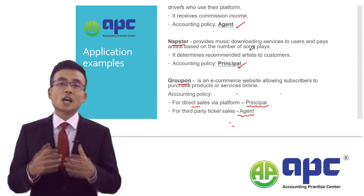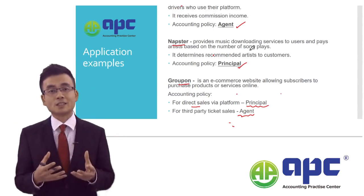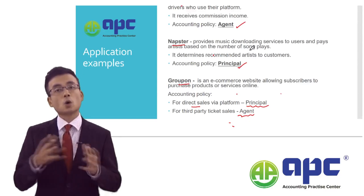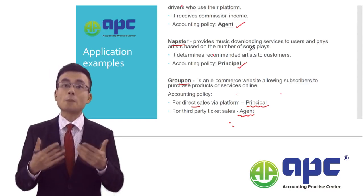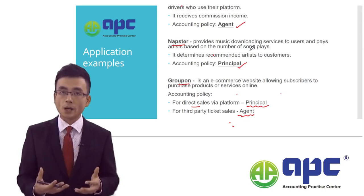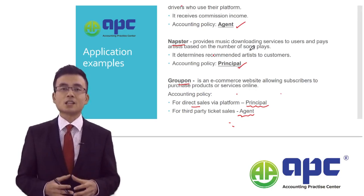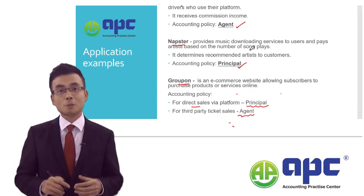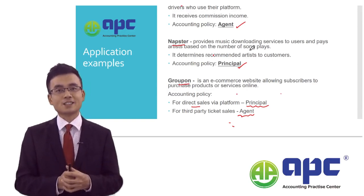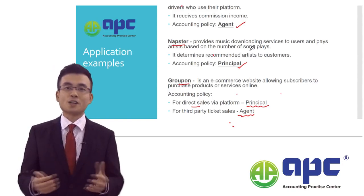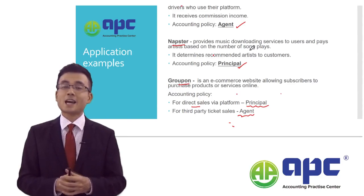So in practice, it is quite difficult to identify whether a company is acting as a principal or an agent. In my article, I provided many more examples of why this complexity arises. If you're interested, please visit our website to see my article and other videos, or join our ACCA courses. I look forward to seeing you then. Bye!